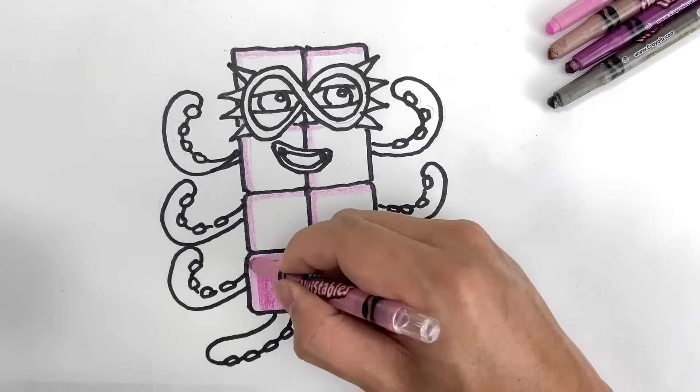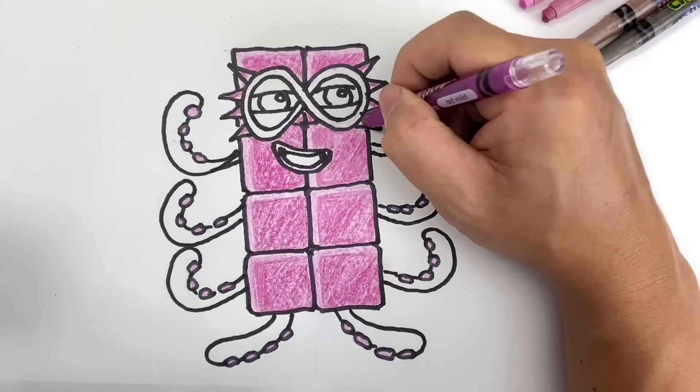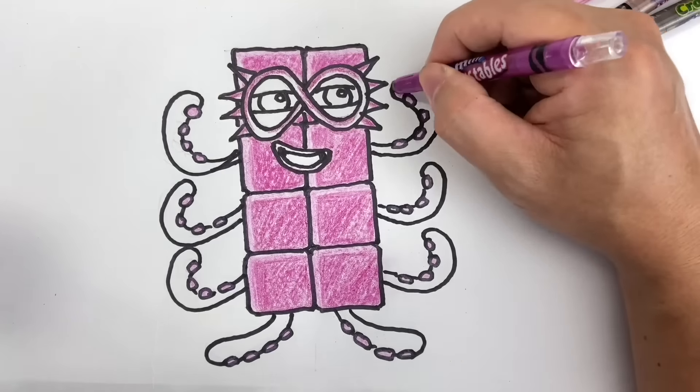Once done, you can now get your purple crayon and color in the highlights of his mask, arms, and legs. Did you know that an octopus is called Octopus because it has eight arms? Just like Octoblock!